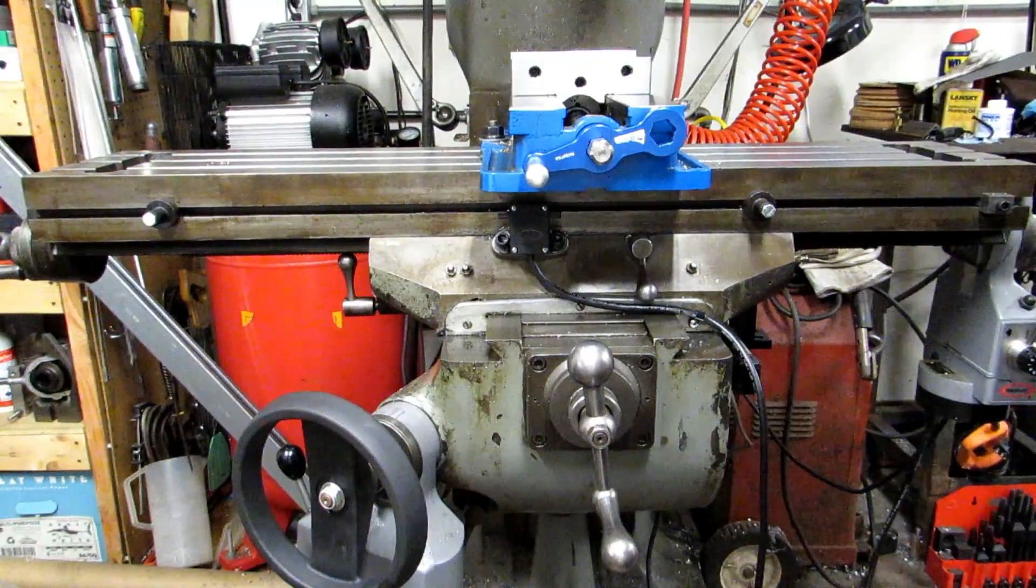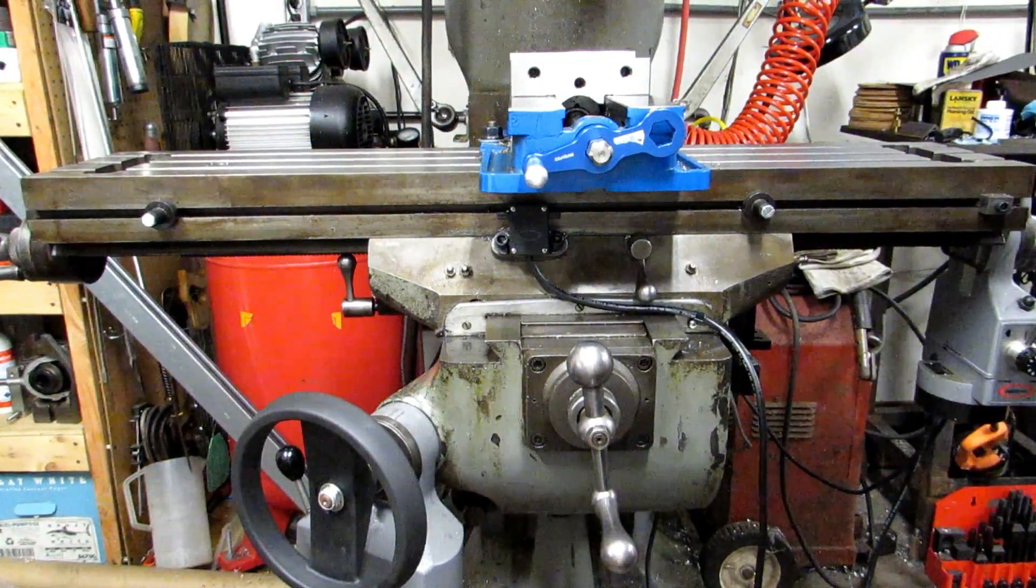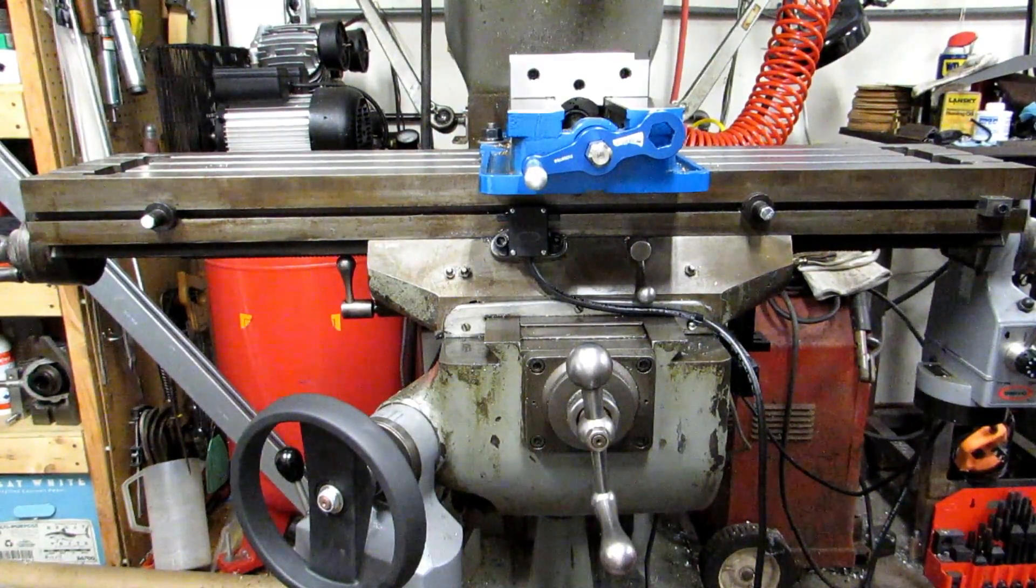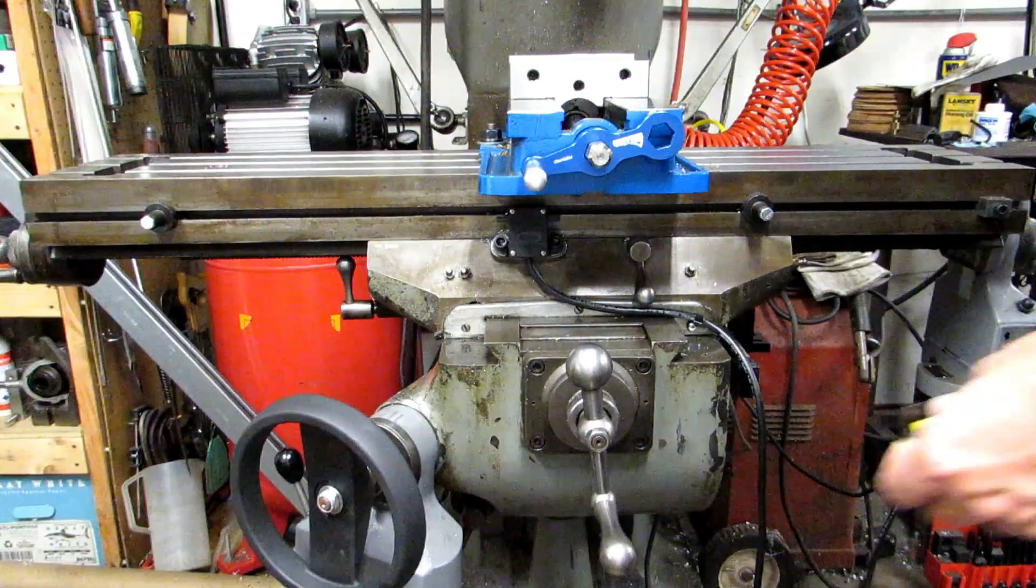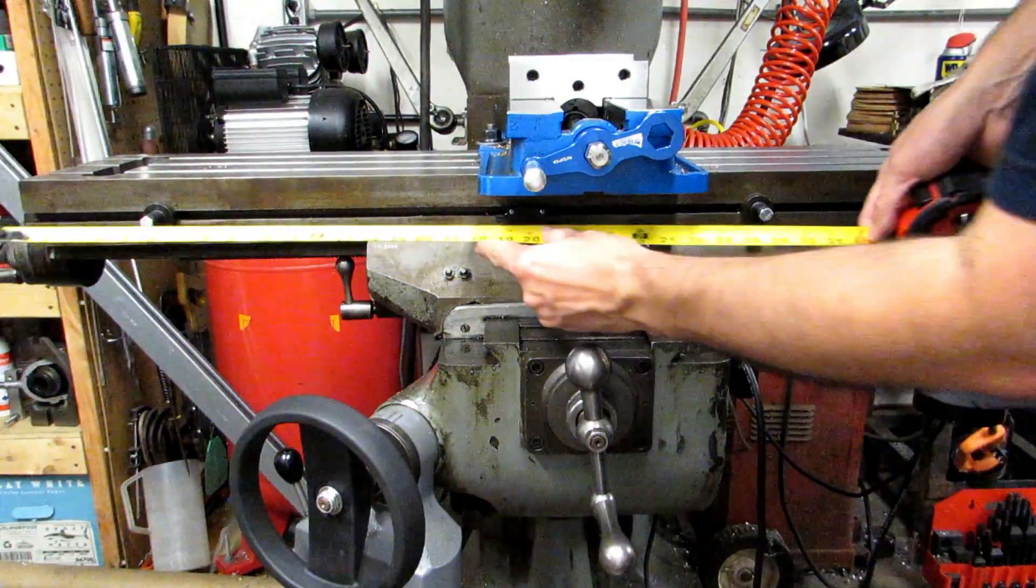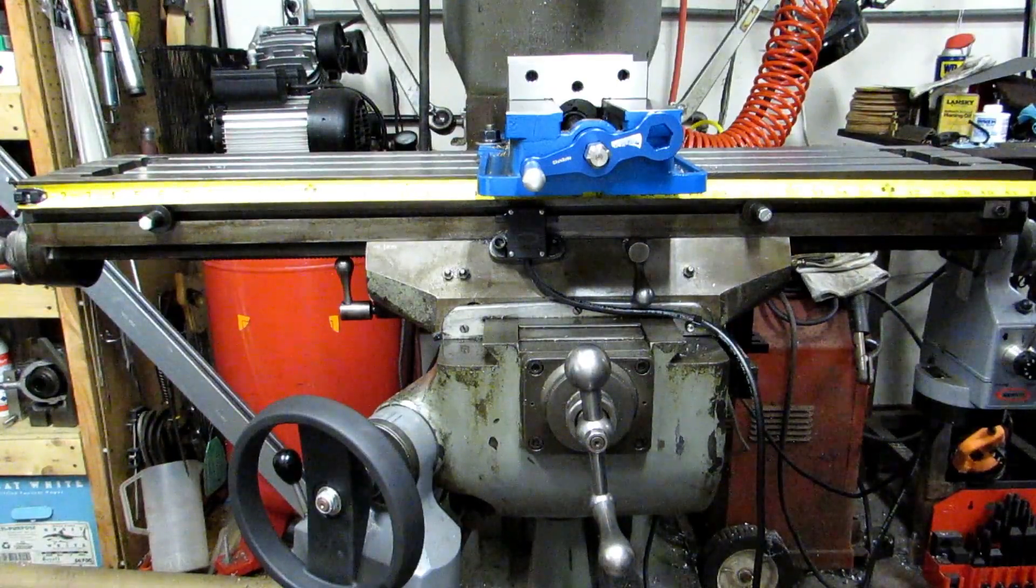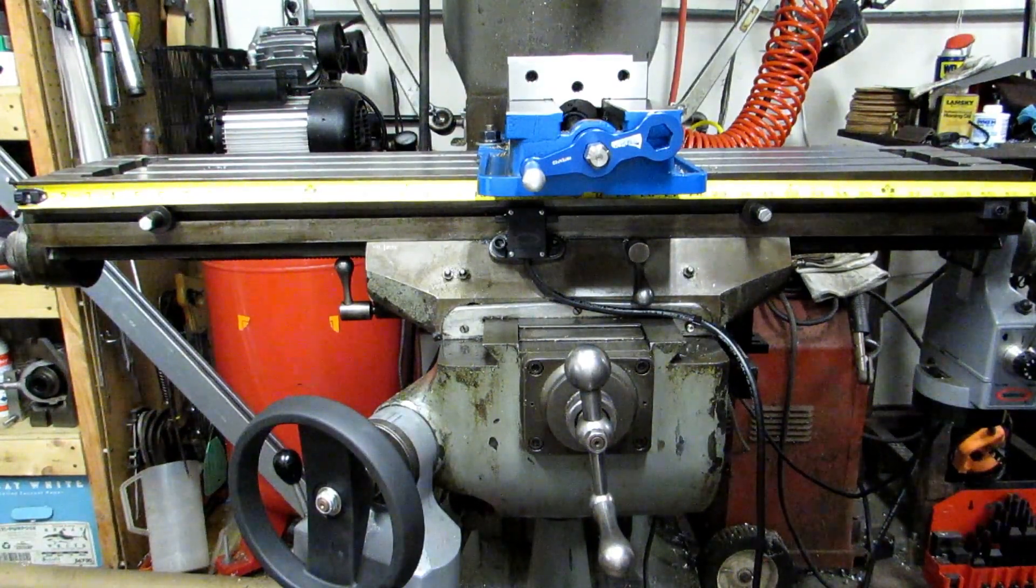So the first thing you should know when you're talking about sizing a mill for a digital readout is that table size and travel size are not the same thing. Now this is a Bridgeport. It's got a nine by 42 table, so 42 inches long. That doesn't mean I have 42 inches of travel.